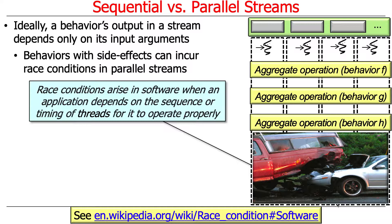Race conditions are hazards that arise in software where an application depends on the sequence or timing of threads or cores in order to operate properly. If something makes your program work only if you get lucky and the threads happen to run in a particular way, those are race conditions. There were three types of hazards mentioned: race conditions, deadlock, and memory inconsistencies — and race conditions and memory inconsistencies can both occur if you're not careful.